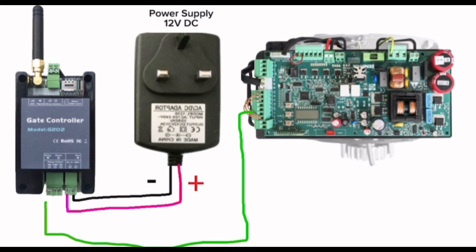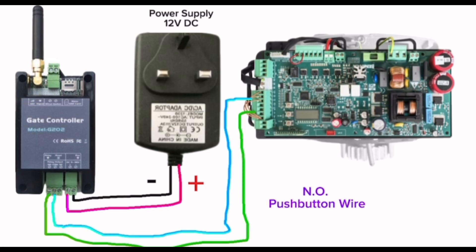This NO relay — when you free call to the GSM, the relay will close and give a signal to the motor. Here, if you want to connect an extra push button, you can; otherwise, no need, leave it.